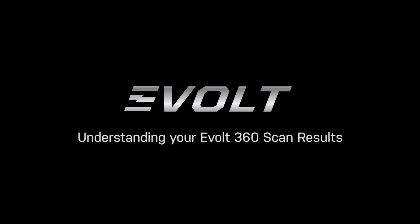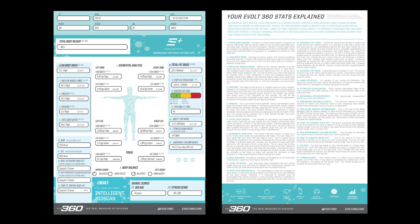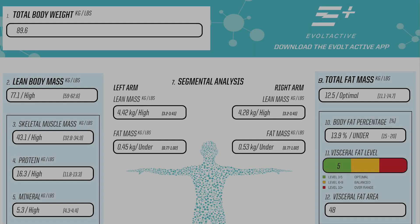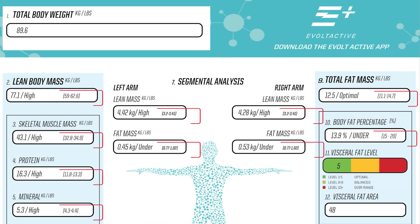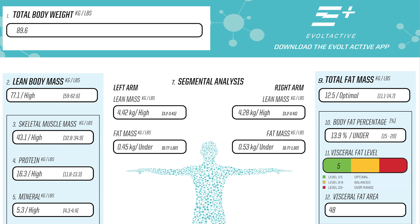The eVOLT 360 scan has been designed to provide you with meaningful data about your body composition in a simplistic, easy-to-read format. There is a detailed, number-referenced explanation provided on each data point on the reverse side of your printed results sheet, or located at the bottom of your scan result if viewing on the eVOLT Active app. Your scan has referenced variables next to each data point which reflects where your results fit within the World Health Organization ranges according to your height, age, and gender. You will see the words under, optimal, or high next to your results, which will provide you with guidance of where your results fit within those guidelines.